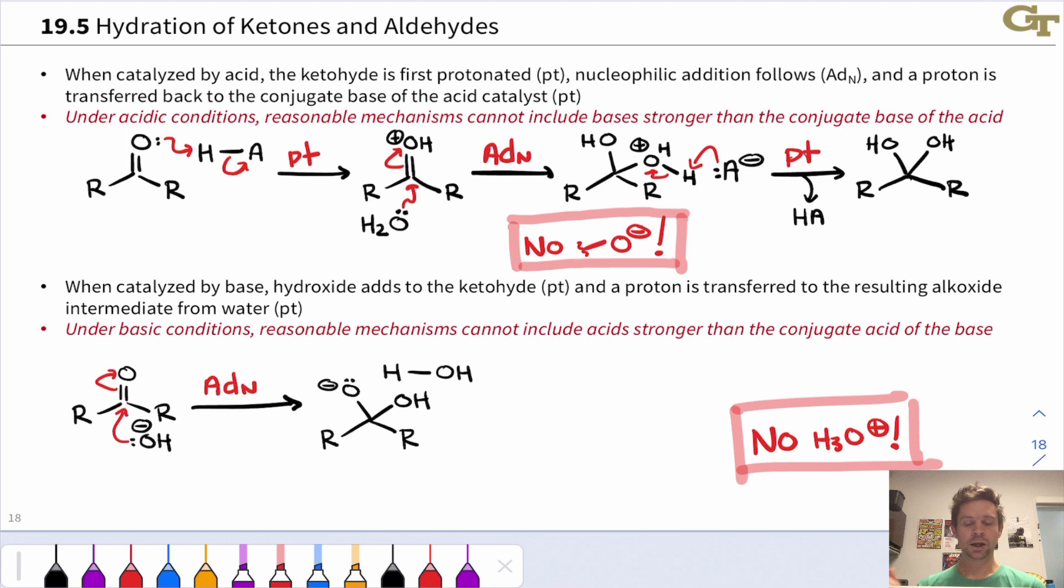At this point, we need to recover the hydroxide catalyst. This can happen via a proton transfer to the alkoxide from water, which is floating around as a solvent molecule. If some other solvent molecule is around, that could donate a proton potentially as well. This generates the neutral hydrate product and also regenerates the catalyst as it must.